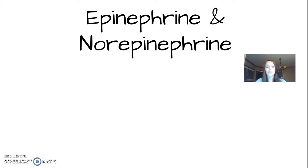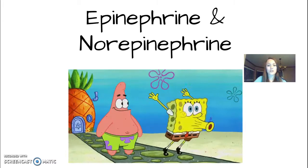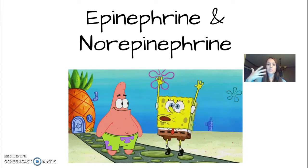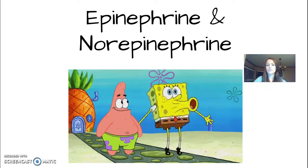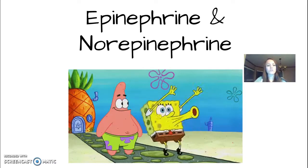Then we've got epinephrine and norepinephrine. EpiPens are named after epinephrine because it's a stimulant — whenever someone's getting an EpiPen, they're giving themselves a stimulant. Think of anything that can amp you up — that's epinephrine. This is the neurotransmitter form of adrenaline. If your nervous system is speeding your body up, it's using epinephrine or norepinephrine. In low levels, this could cause depression.